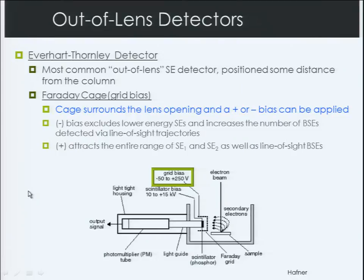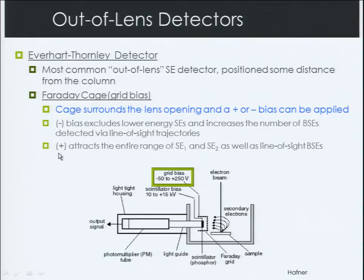As an example of a type of out-of-lens detector, there's the Everhart-Thornley detector — the most common out-of-lens secondary electron detector. It's positioned some distance, typically about 12 to 14 inches away from the sample itself. There'll be a Faraday cage to produce a grid bias surrounding the lens. You can apply a positive bias to attract the entire range of secondary electrons. A negative bias could push away some of the lower energy, slower-moving secondary electrons, and actually allow the detection of some backscattered electrons, depending upon what information you're trying to gather from your sample.